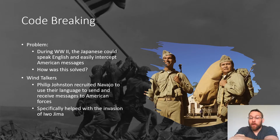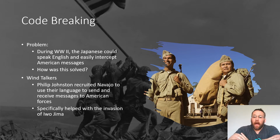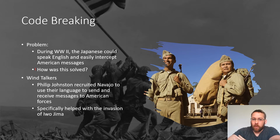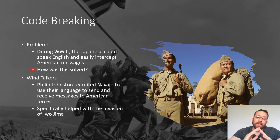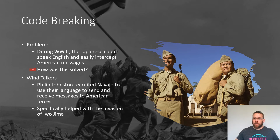Now, some actual code — the way we think about code more often. I have two examples from World War II. In World War II, there was a problem: the Japanese could speak English and they could easily intercept American messages. People in charge had this problem — how are we going to code a message so that when we send it off to the ships and submarines in the Pacific, it's not intercepted by the Japanese and easily translated back into English? This is how a code gets written as far as secret military codes.